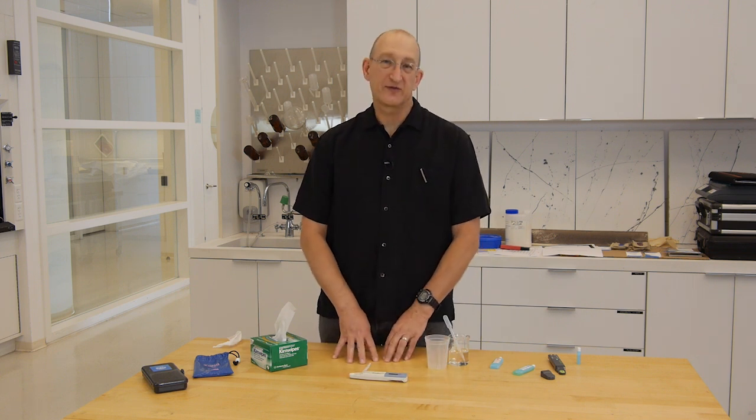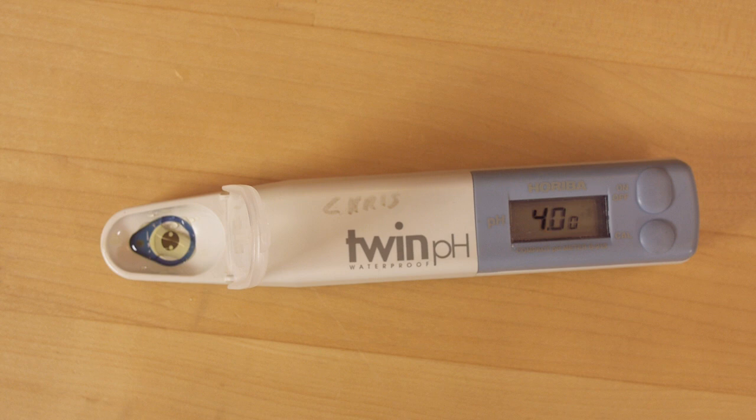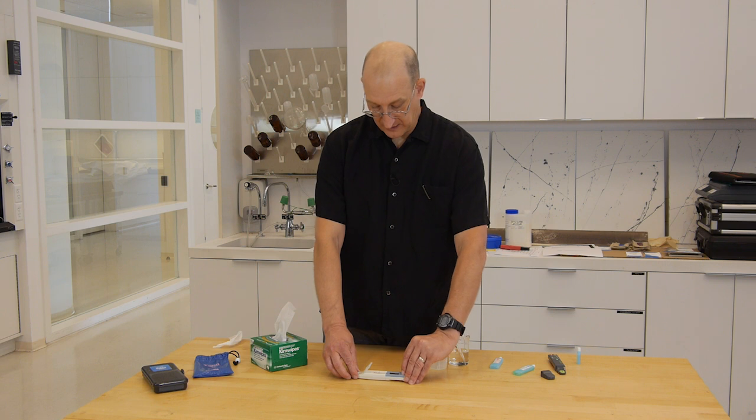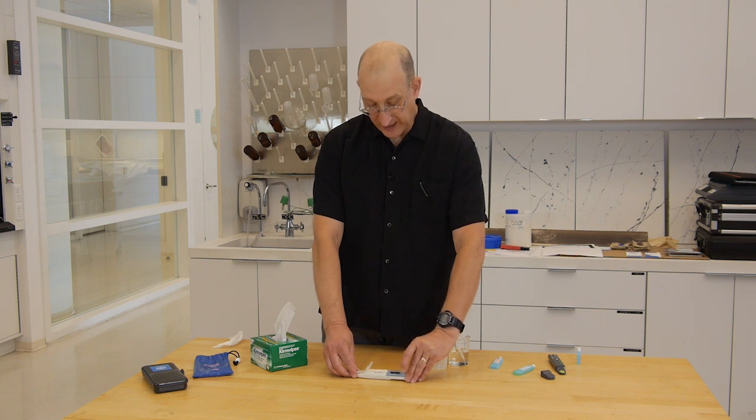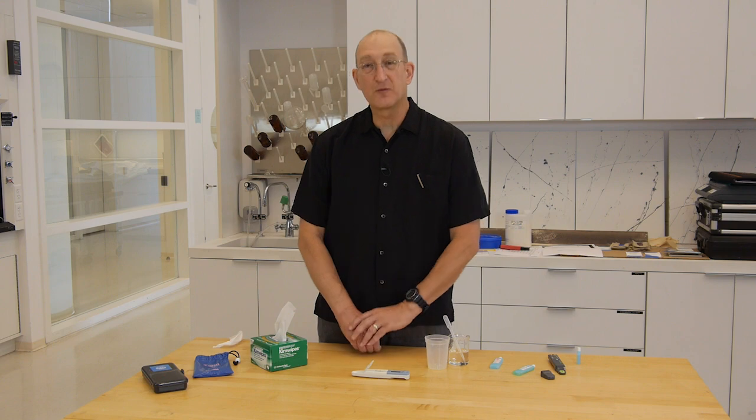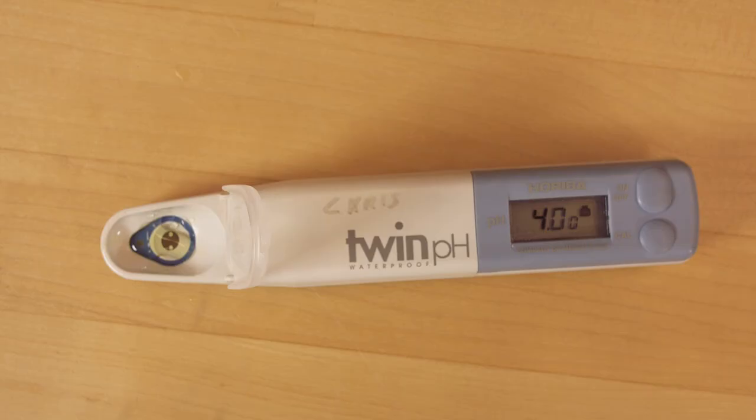Again, we wait for the happy face. We have our happy face, so we push the calibrate button. Initially it wants to calibrate to pH 7. We don't want that. We push again, and we're now calibrating to pH 4. If we were calibrating to 10, we would push one more time, and we would get the calibration for 10. We wait again for the happy face.